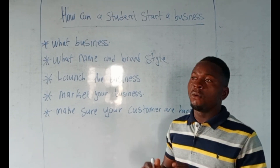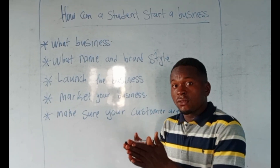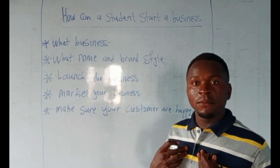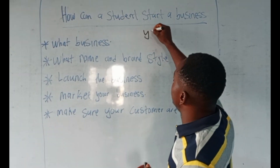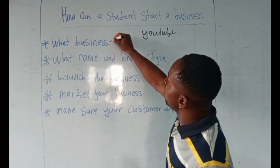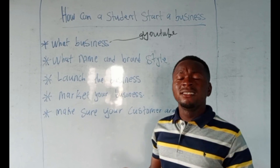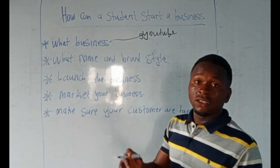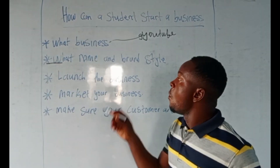When you ask yourself which business, you think of that business you want to start. Say for example, for item one, I want to do YouTube. Now what is the name of that channel? That's the next question you need to be asked — that's question number two.